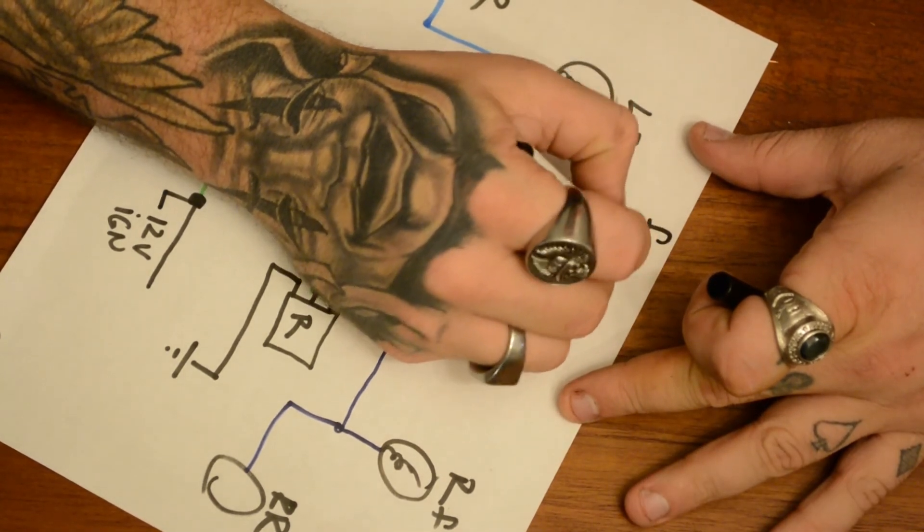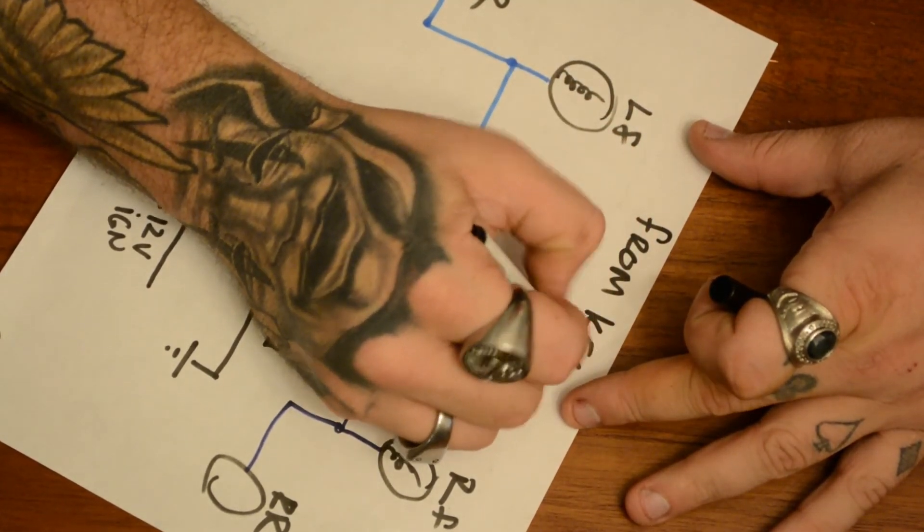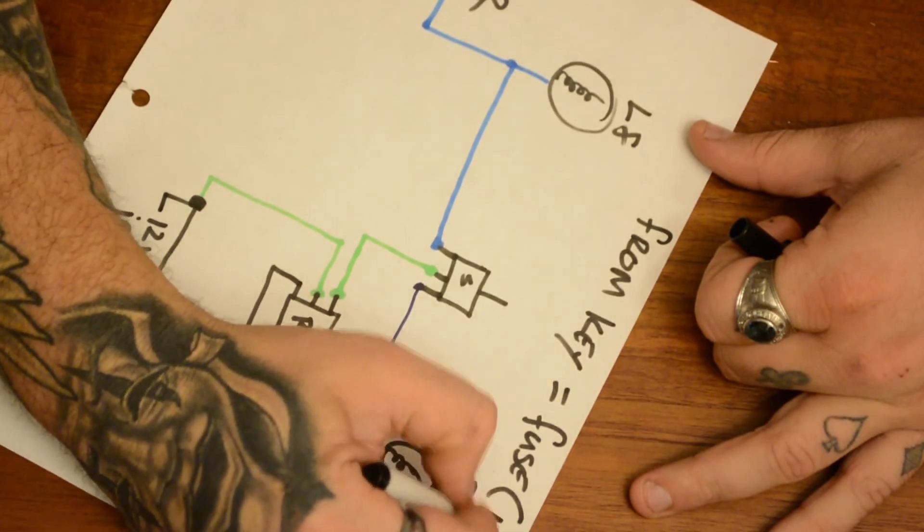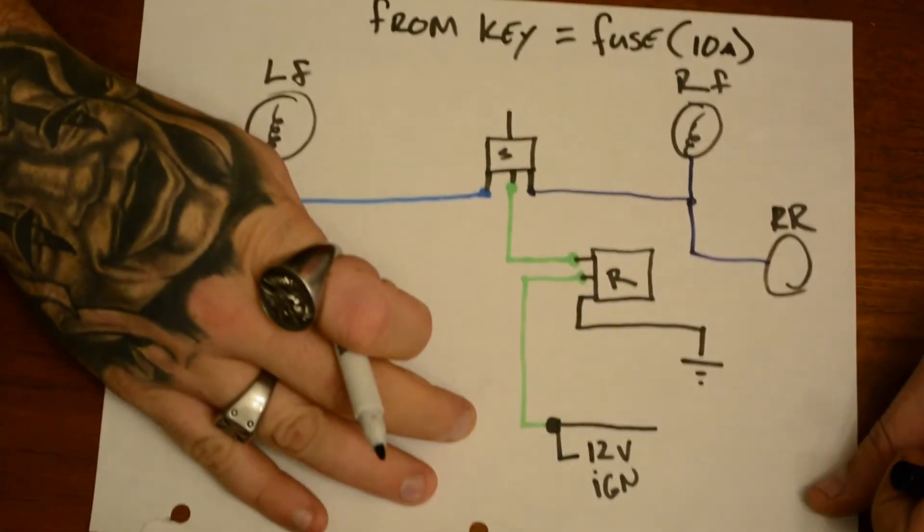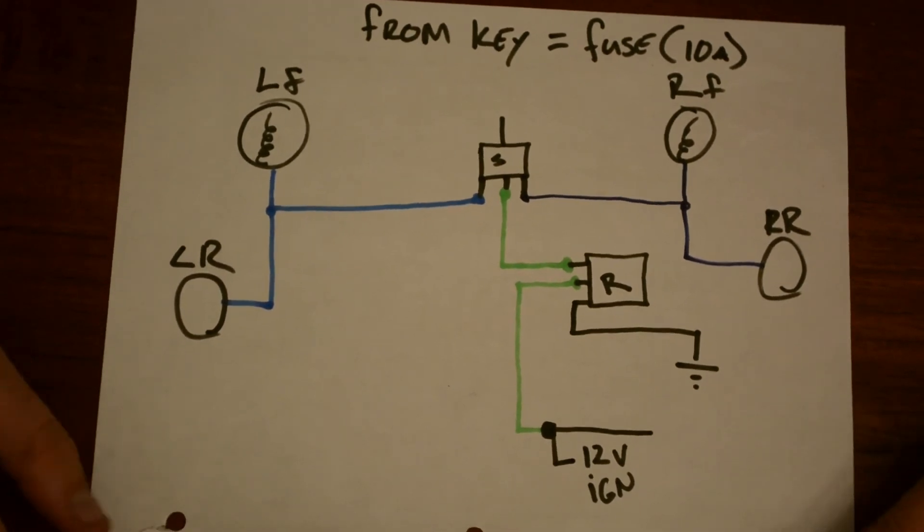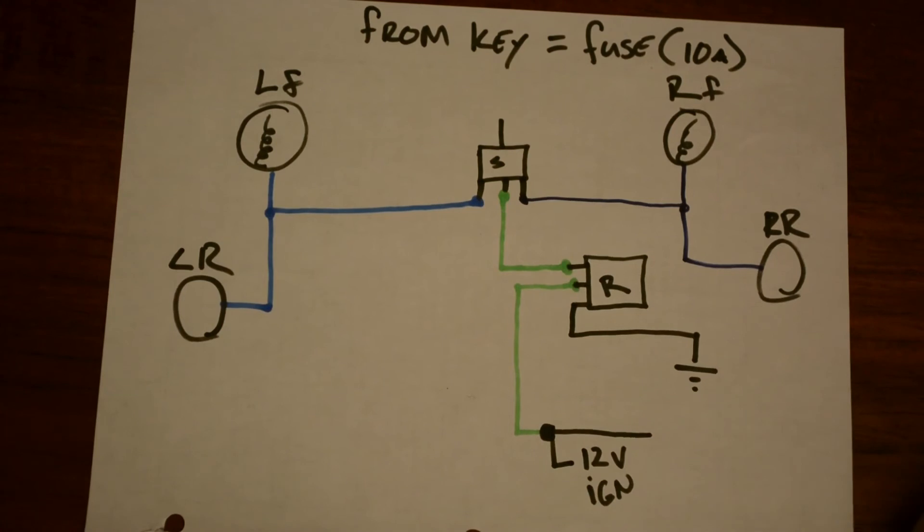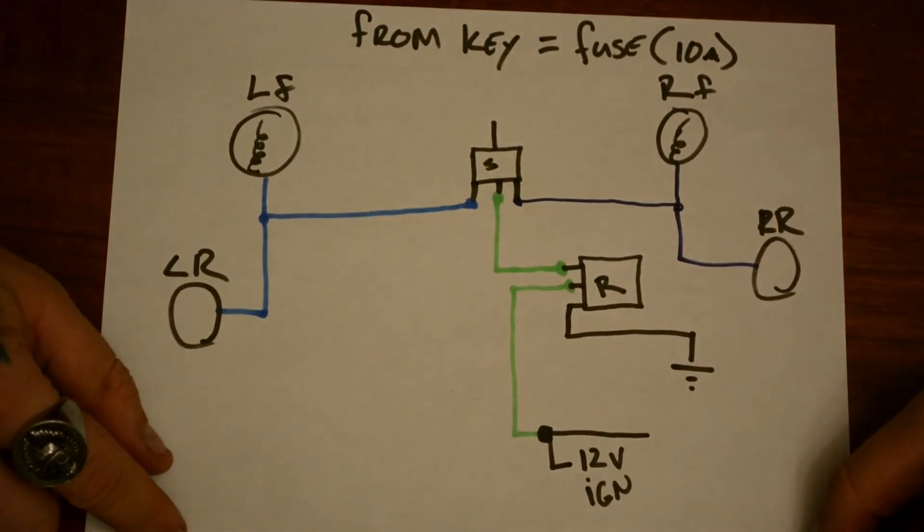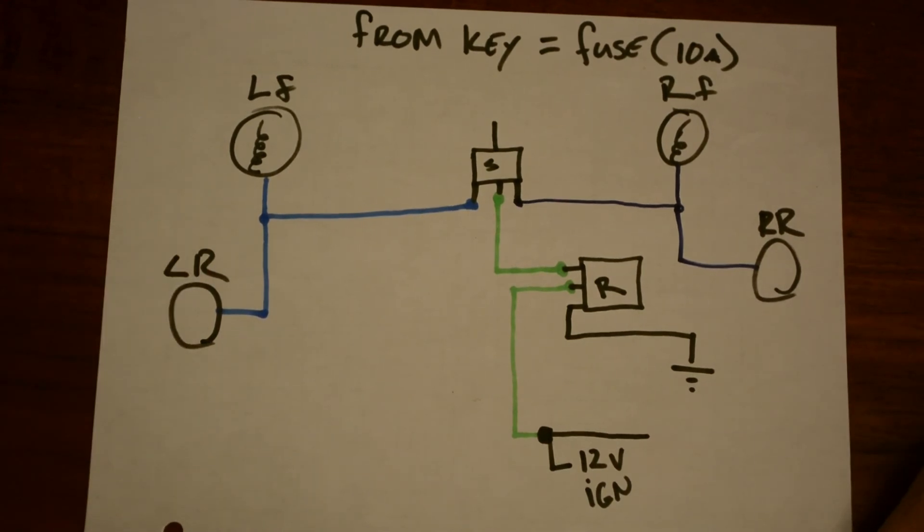And I'm going to put from key equals fuse, and we're going to say a 10 amp because that's pretty standard on a turn signal circuit. So if you come from the key, you're going to want to wire in a 10 amp fuse. If you're coming from something, say like your headlight or whatever, don't pull it off your headlight because it'll pull power from your headlight sometimes. But your brake light circuit or whatever, you know, there's already a fuse there. But either way you do it, just make sure that you have a fuse for your power.